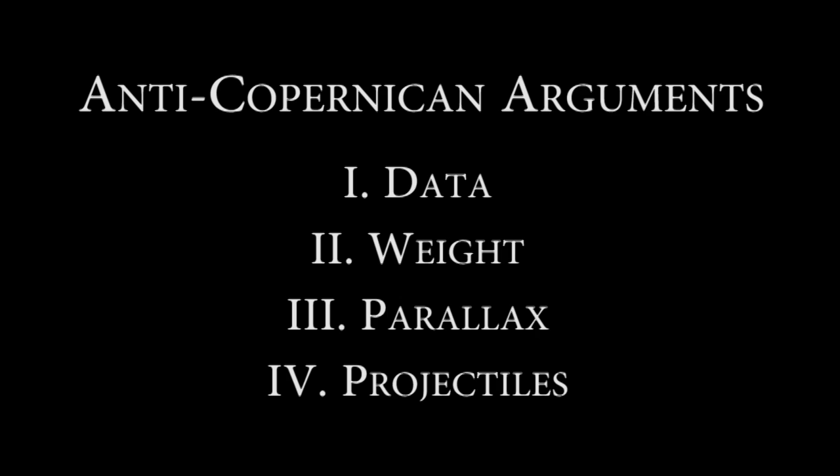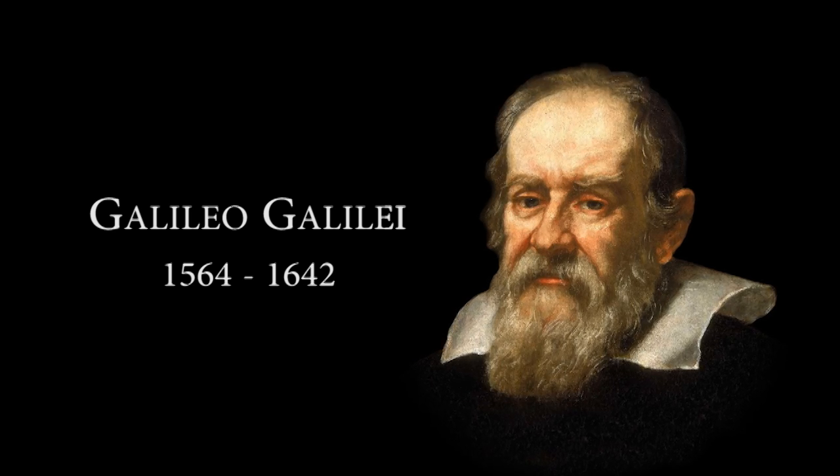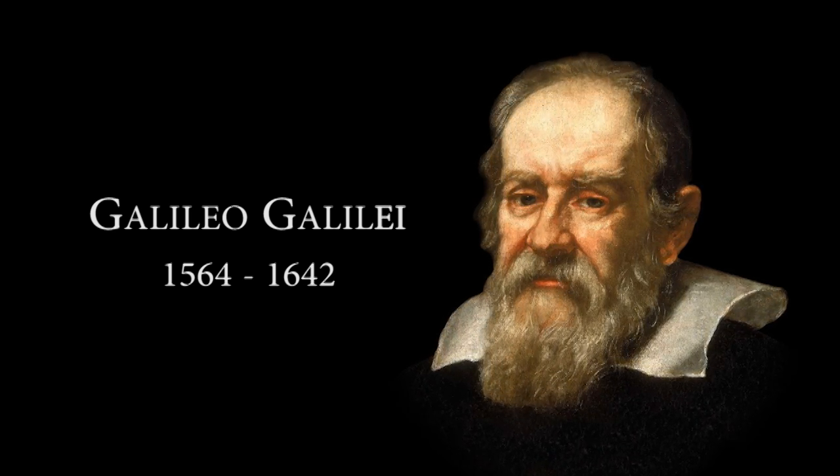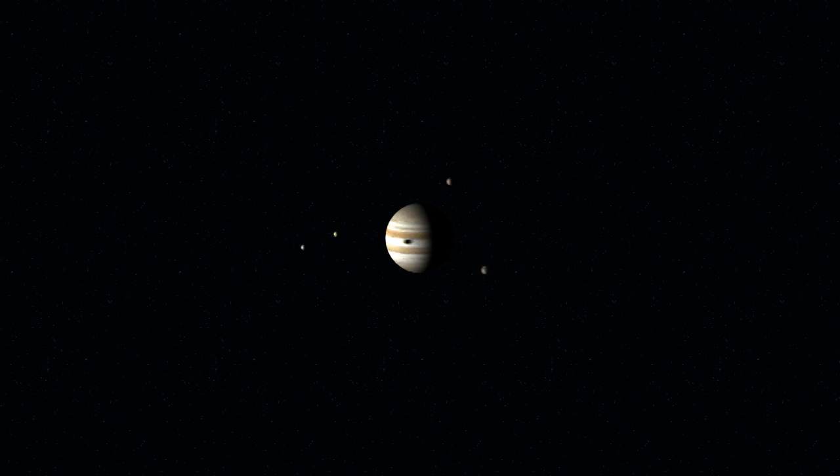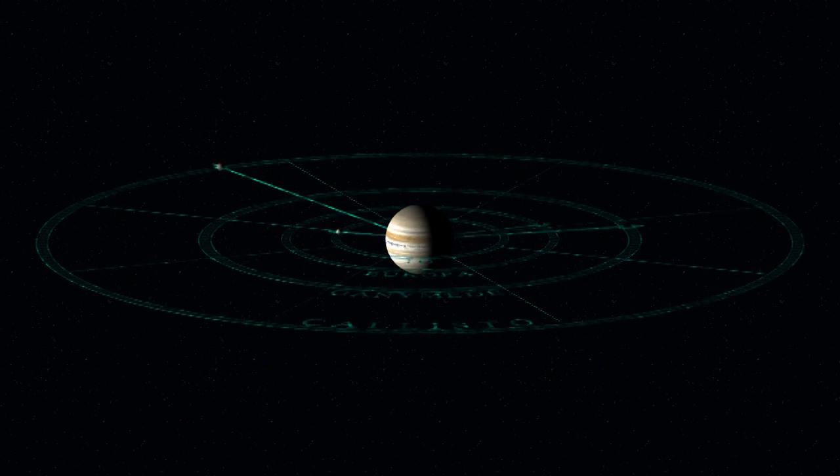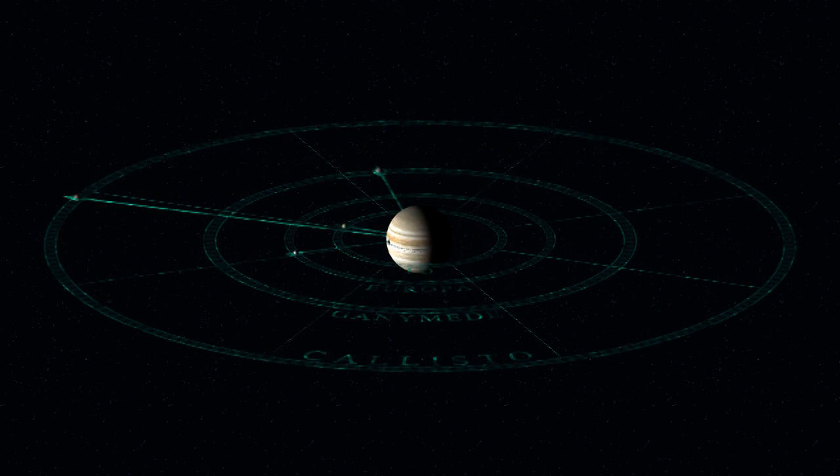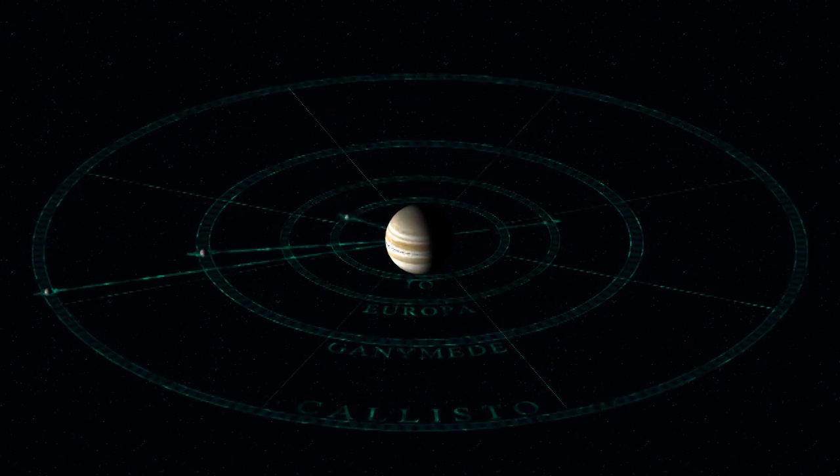These problems with Copernicus would stump scientists for centuries. Galileo made two key discoveries that supported Copernicus. He discovered four moons orbiting Jupiter, proving that there were objects that did not orbit the Earth.